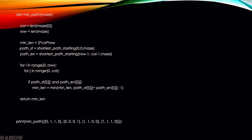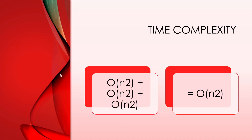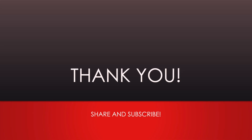The time complexity of the shortest path function is O(n²). Since we call the shortest path function twice, that gives O(n²) for each call. We also loop through the maze using two for loops, adding another O(n²). The total time complexity is the sum of three O(n²) terms, which is O(n²) overall.